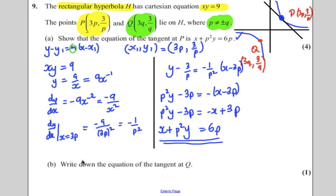Now, it says, write down the equation of the tangent at Q for one mark. Now, it doesn't want us to rework this all out. Now, if that's the tangent at P, and the coordinates of P are (3p, 3/p), then the tangent at Q,